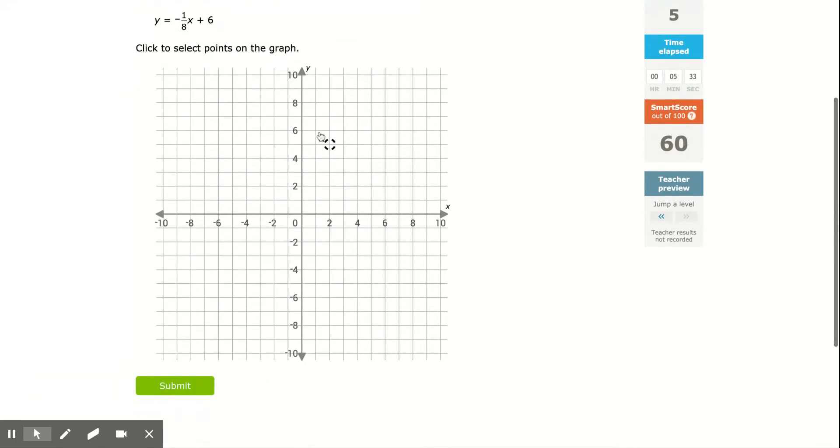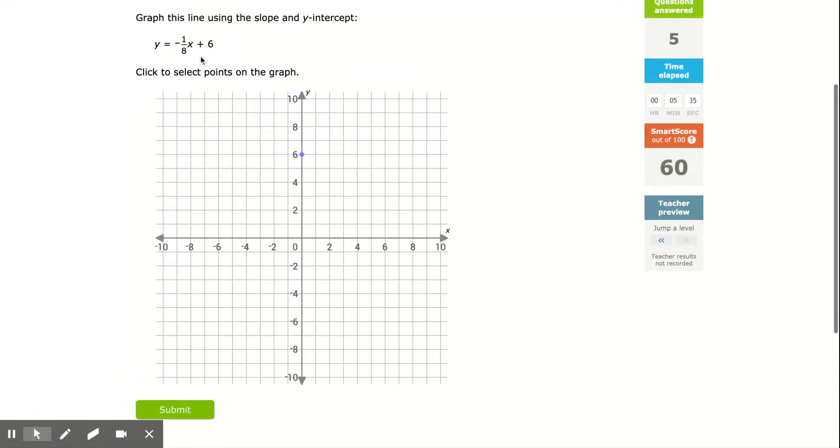So again, start at 6, negative 1/8 slope. So I'm going to go up 1 and left 8, to there. I could technically go down 1 and right 8 and put it right there. It would have been just fine to go there as well. But the point is, only make 1 or 8 negative, not both of them.